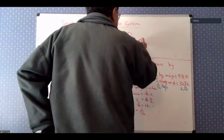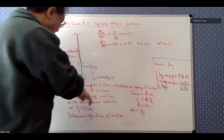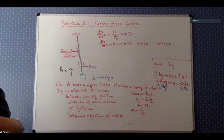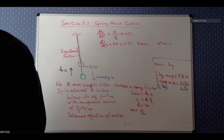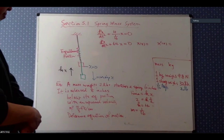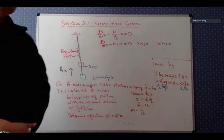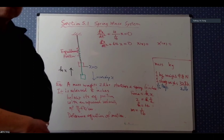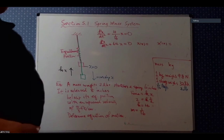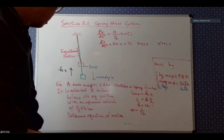This is an initial value problem. The mass is released from below the equilibrium position — released eight inches below, which is 8/12 = 2/3 feet. So x(0) = 2/3.